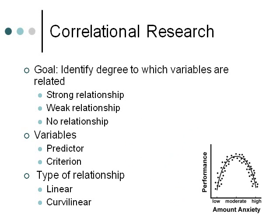The other type of curvilinear relationship is a symmetric curve, where the direction of the relationship changes depending on the value of X. A classic example is anxiety and performance. At low levels of anxiety, there's a positive relationship — as anxiety starts to increase, performance gets better. But to a point, then at higher levels of anxiety, as anxiety continues to increase, performance begins to decrease.